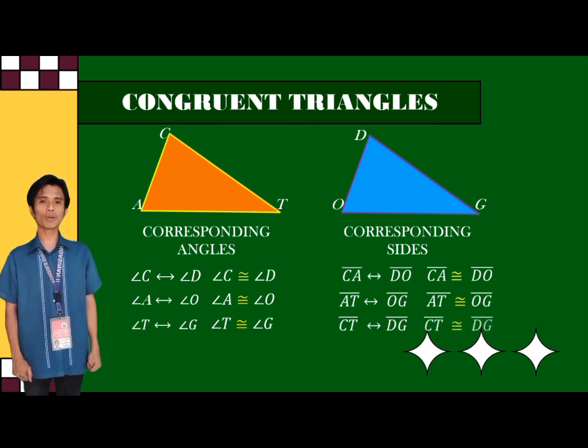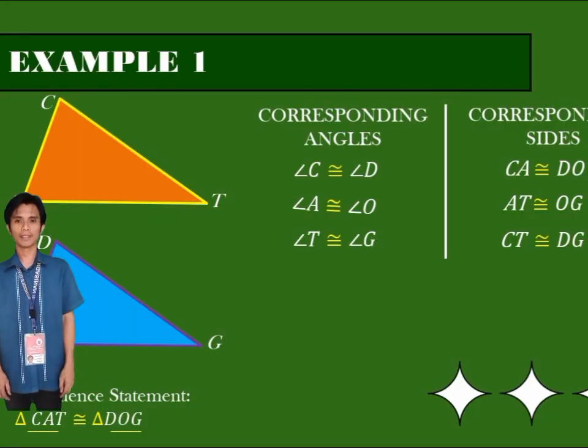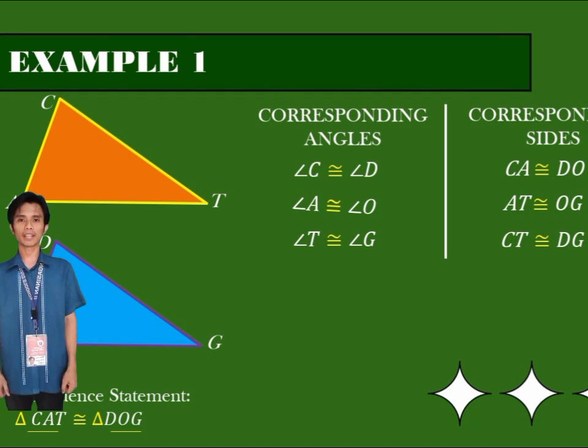And therefore, triangle CAT is congruent to triangle DOG. Let us have our first example.